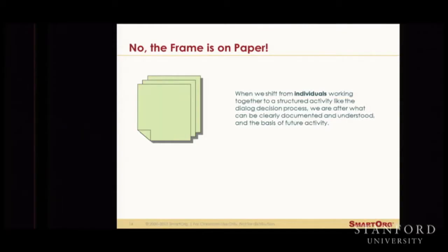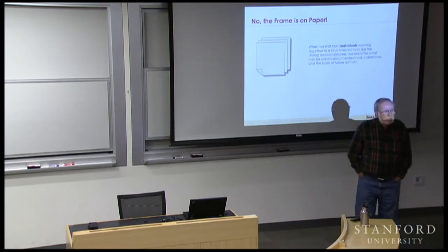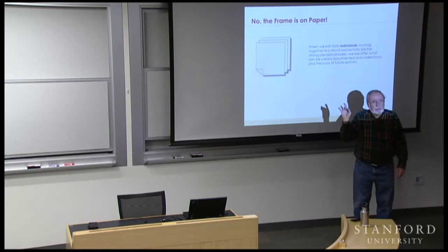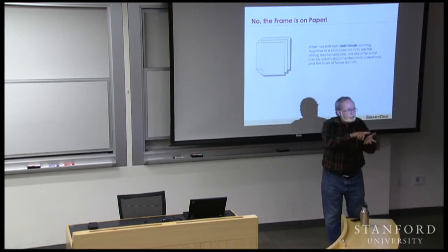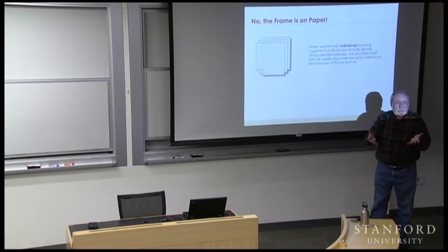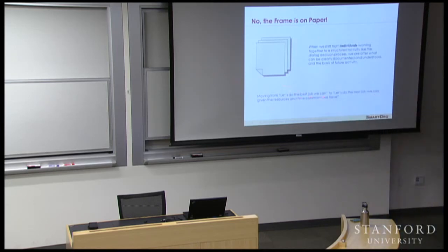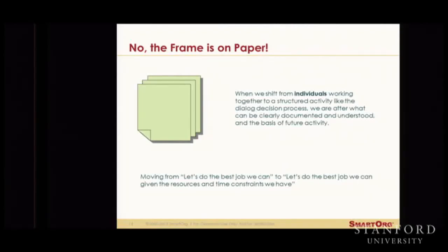Peter has a slightly different perspective. In terms of a group process, it's all well and good to have things in people's heads, but when it's a group, what's on paper is important. The group comes together, shares what's in their heads as best they can, and writes on paper: 'this is the problem as we see it.' It's an agreement on the problem we're solving given these concerns. You're moving from 'let's do the best job we can' to 'let's do the best job we can given the resources and time constraints we have' — that's the central issue when working with organizations.